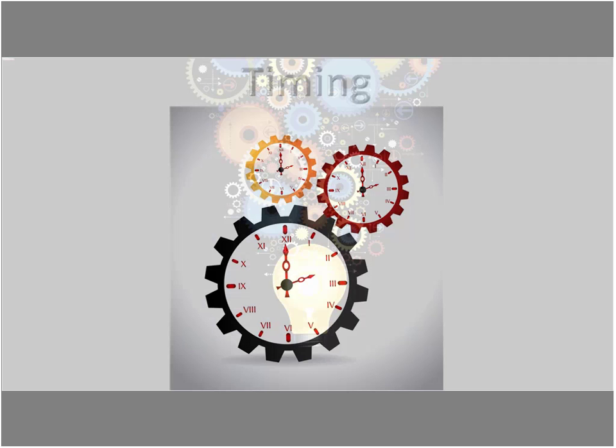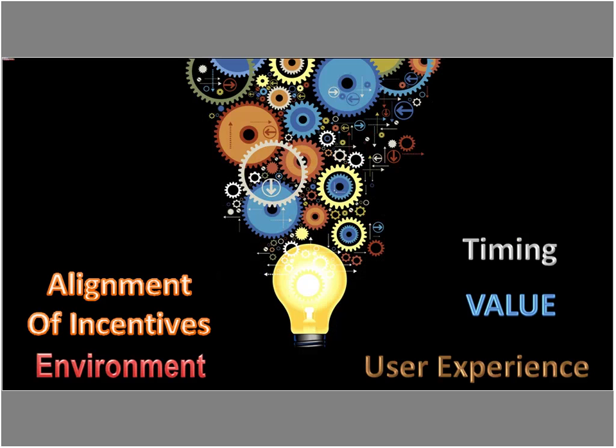So let's summarize. There are five key themes you need to be aware of and resolve in order for your innovation to be successful: environment, alignment of incentives, value, user experience, and timing. In the environment, understand all of the factors that can be barriers that may not be under your control. Under alignment of incentives and value, it's mostly about money talks. Under user experience, give the end users something they will and can use and enjoy using. And finally, ask yourself if the timing is right.